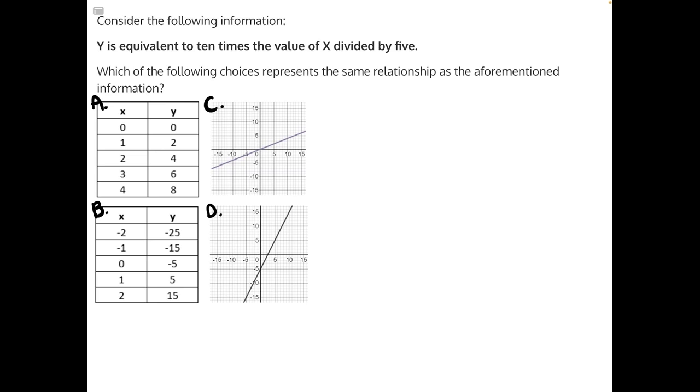To solve this question, let's first start by writing out this equation into mathematical terms instead of in words. Y is equivalent to 10 times the value of x divided by 5. And from here we can simplify. 10 divided by 5 will give us 2. So our equation is y is equal to 2 times x.